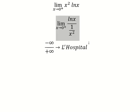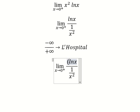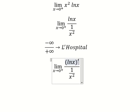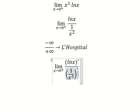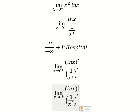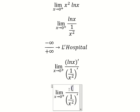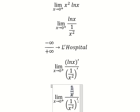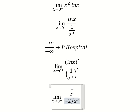That means we need to take the first derivative of the numerator and denominator. The derivative of ln(x) is 1/x, and the derivative of 1/x² is negative 2/x³.